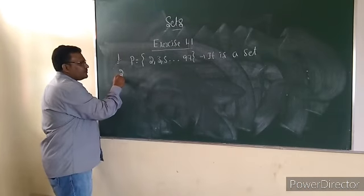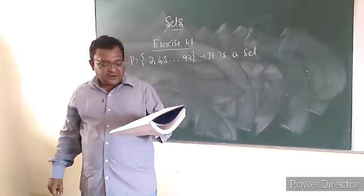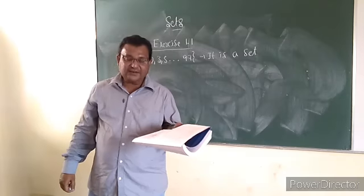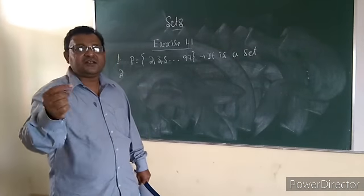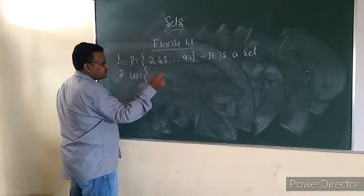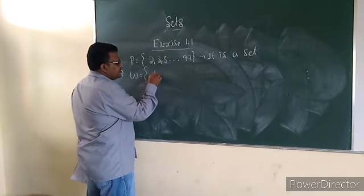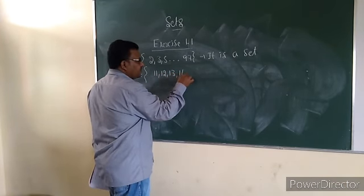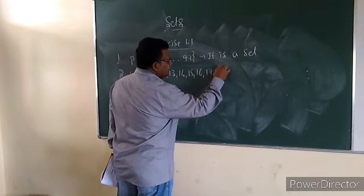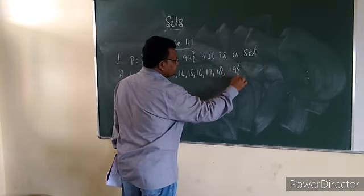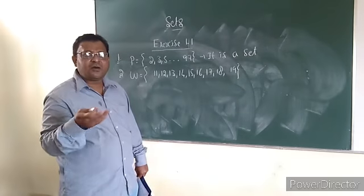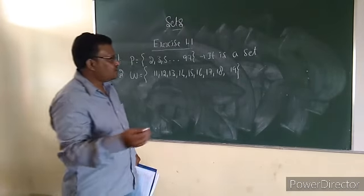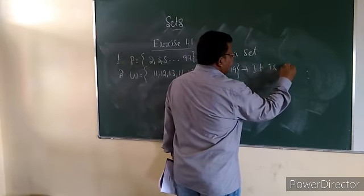The second one: collection of all whole numbers lying between 10 and 20. Those are 11, 12, 13, 14, 15, 16, 17, 18, 19. Yes, this one is also a set. It satisfies the set conditions — all distinct elements, and it is also well-defined. They are whole numbers between 10 and 20. So it is a set.